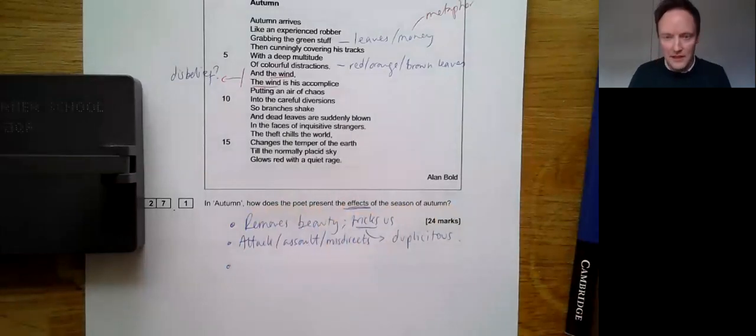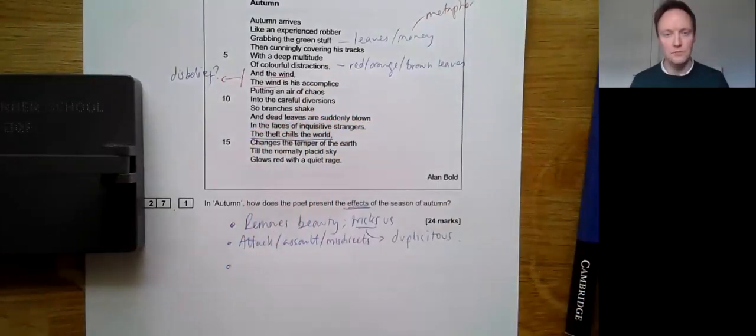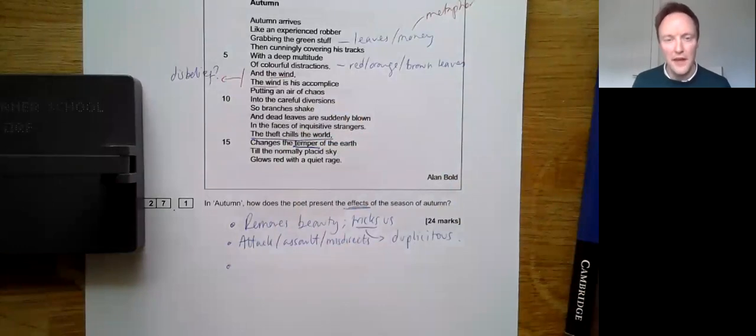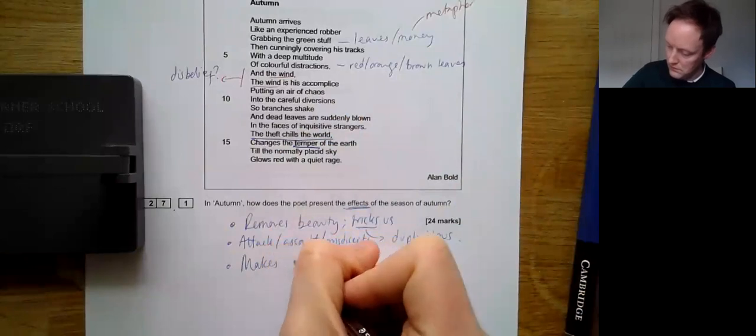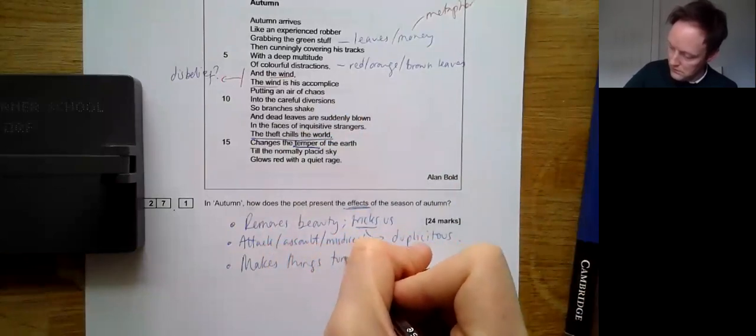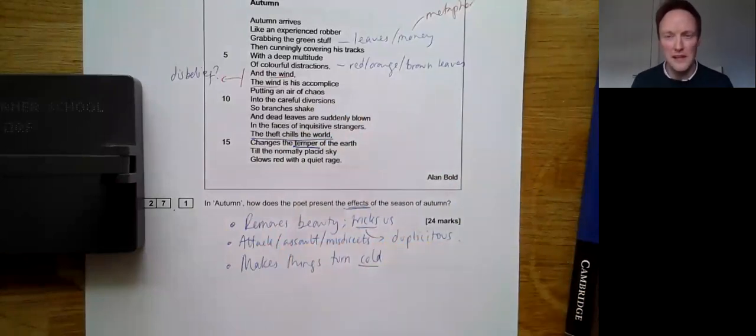These things should be connected now, because the duplicitous nature of autumn, and his accomplice, his cunning friend, the wind, helps to attack, to assault, and misdirect us. It's here, perhaps that we begin to see the effect of autumn. Most explicitly, however, the theft chills the world, it changes the temper of the earth. Now, on a very literal level, what's the effect of autumn? It makes things turn cold. The temper of the earth is altered, so it's less warm.